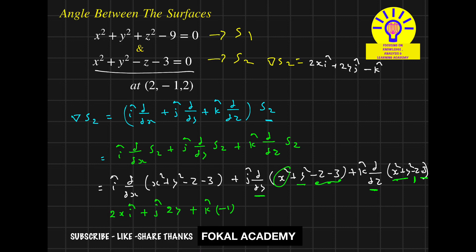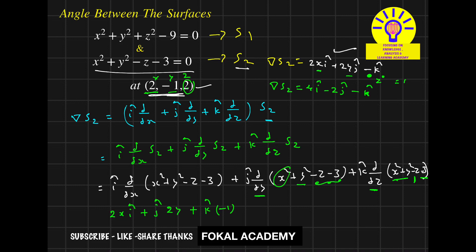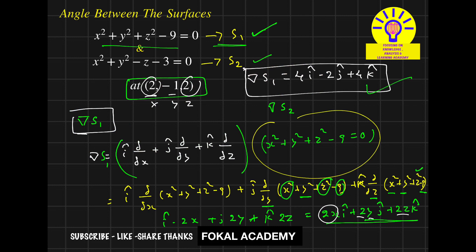We want the normal vector at this point. Substitute this point into the equation. Del S2 at this point: x = 2, so 2×2 = 4, giving 4 i-cap. y = −1, so 2×(−1) = −2, giving −2 j-cap. For k-cap, the coefficient is −1 regardless of z, so it remains simply −k-cap. This is the normal vector for surface 2.